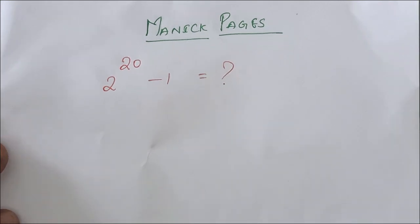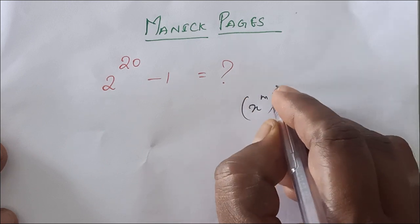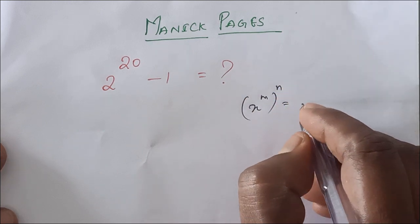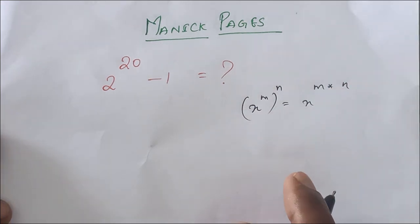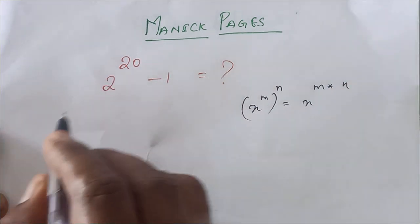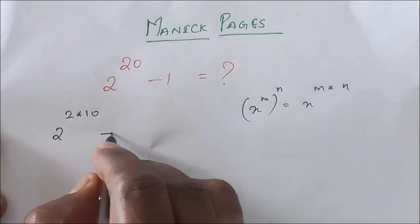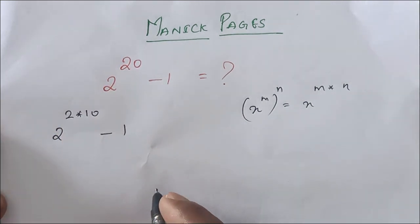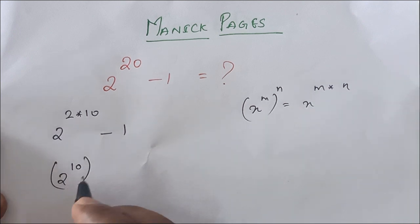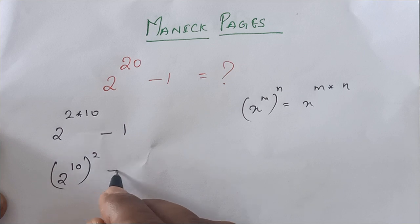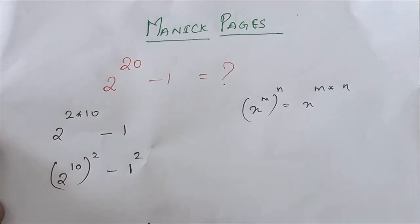We know that the property says x power m, power m is nothing but x power m into m. So 2 power 20 is nothing but 2 into 10 minus 1. We can write this like 2 power 10, power 2, minus 1 power 2. And 1 square is nothing but 1.